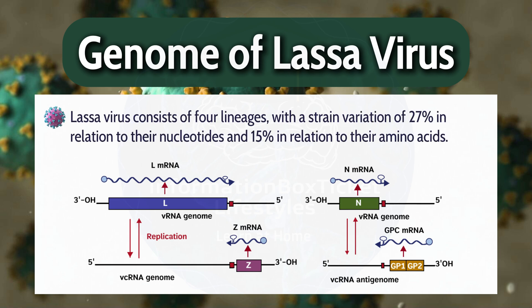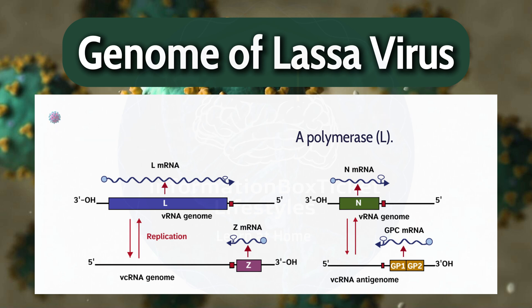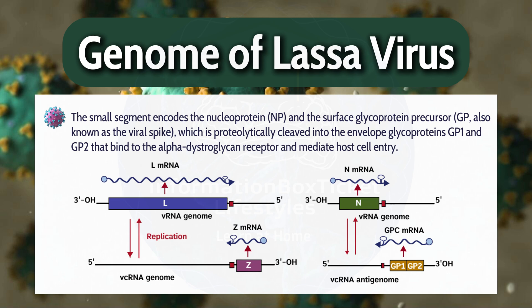Lassa virus consists of four lineages, with a strain variation of 27% in relation to their nucleotides and 15% in relation to their amino acids. The large segment encodes a small zinc-binding protein, Z, that regulates transcription and replication, and the RNA polymerase, L. The small segment encodes the nucleoprotein, NP, and the surface glycoprotein precursor, GPC — also known as the viral spike — which is proteolytically cleaved into the envelope glycoproteins GP1 and GP2 that bind to the alpha-dystroglycan receptor and mediate host cell entry.